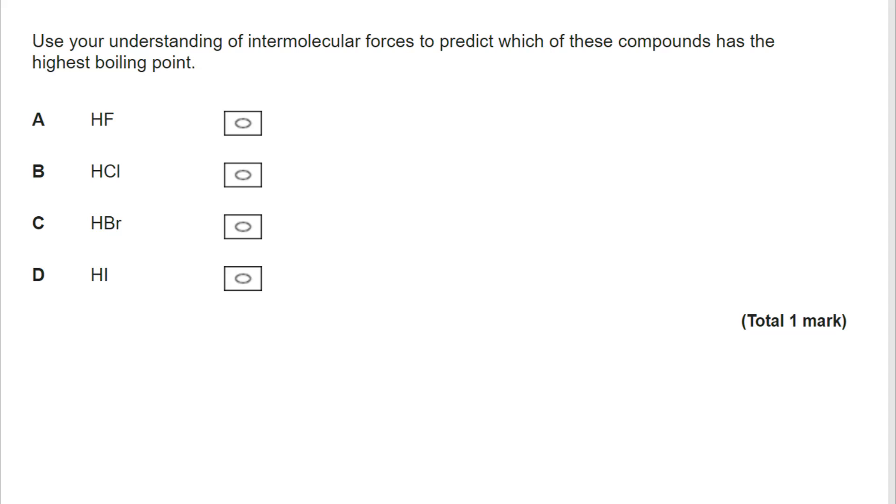So we're now thinking about intermolecular forces, the different types of intermolecular forces and where we might find them. These are all hydrogen halides. The big difference that we're looking at though is HCl, HBr and HI are all dipole-dipole or permanent dipole-permanent dipole. Whereas in HF we have hydrogen bonding. We know that that is the strongest intermolecular force and therefore we know that A is the correct answer.